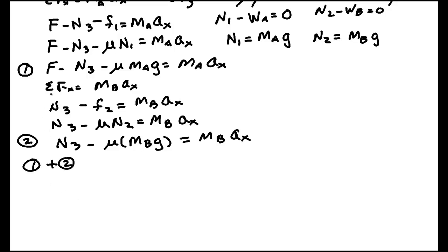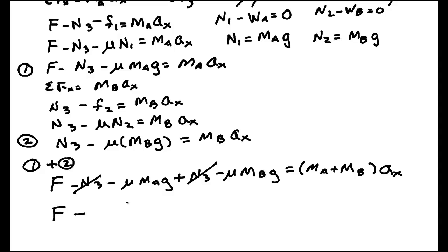Equation one plus equation two. We get F minus N3 minus μMA times G. On the bottom, we get plus N3 minus μMB times G. And on the other side, we get MA times AX and MB times AX. The AX is the same, so I can factor them out. Notice that this cancels this. We get F minus μ times (MA plus MB) times G is (MA plus MB) times AX.